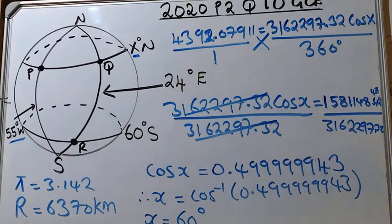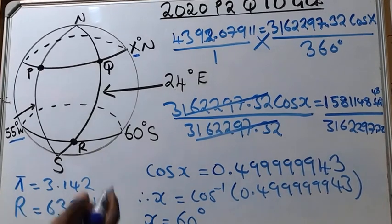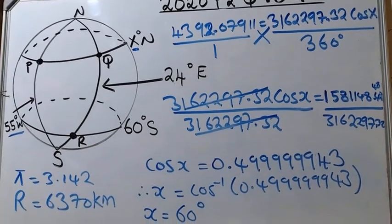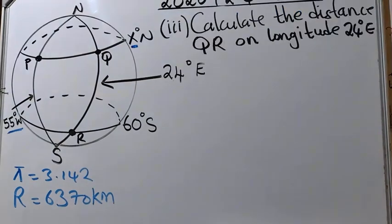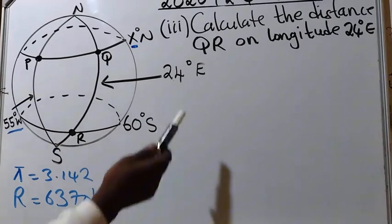Make sure you follow through carefully on your calculator — I did make a mistake at first by forgetting the radius of the Earth, but I corrected it. Always calculate carefully to get the correct value. Now let's proceed to the last question, Roman numeral 3.